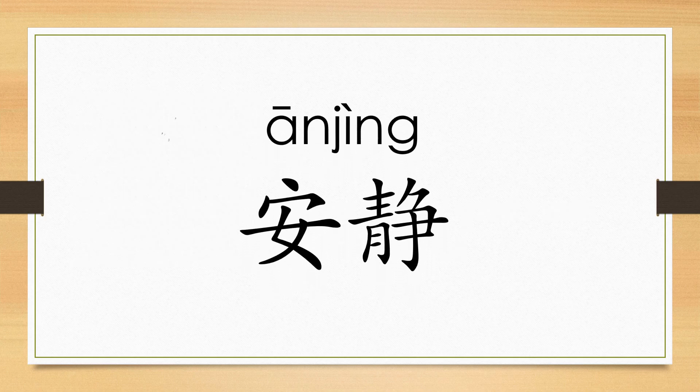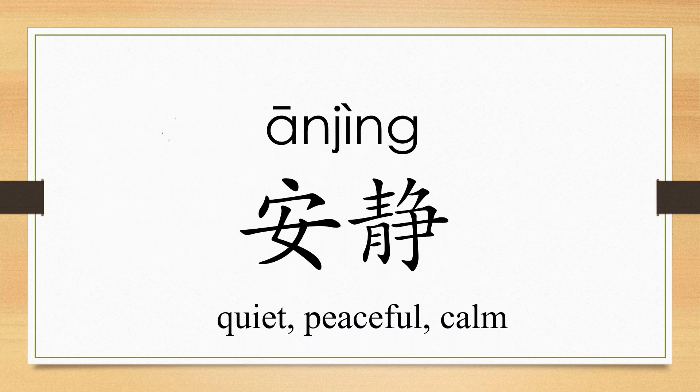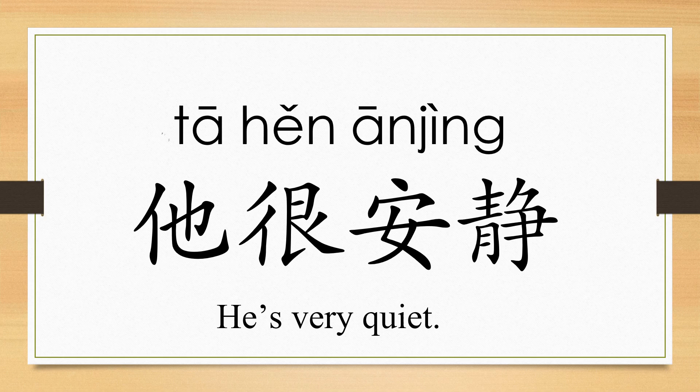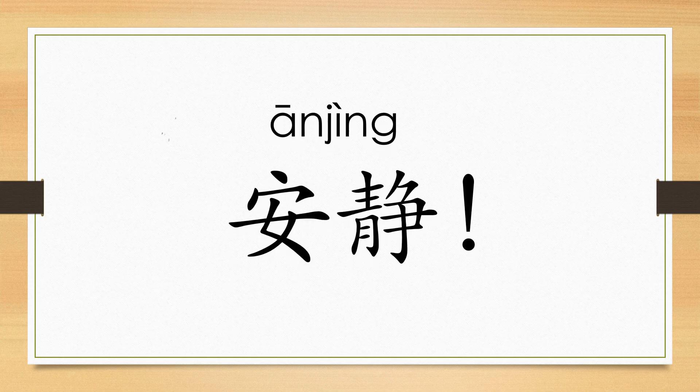安静 (Ānjìng) means quiet and peaceful. 安静. 他很安静 — here, 安静 is used to describe a person's character. He is very quiet. 他很安静.